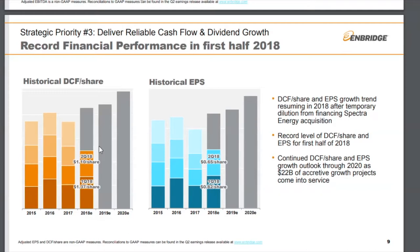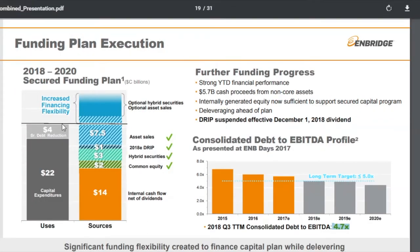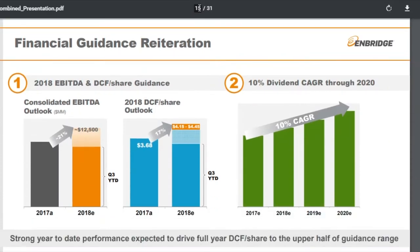The last point, and I think most importantly, is valuation. Going to slide 15 on the most recent Q3 results presentation, if we assume $4.30 of distributable cash flow per share — they're talking about the upper half of the guidance range, between $4.45 and $4.50 — let's assume $4.30 as our base case.